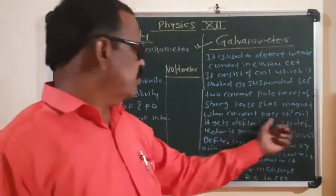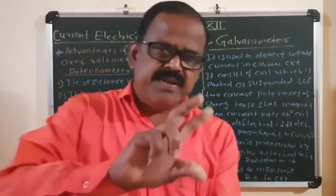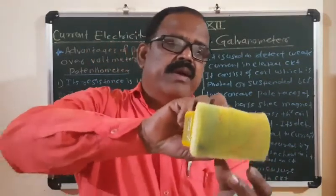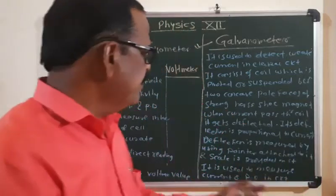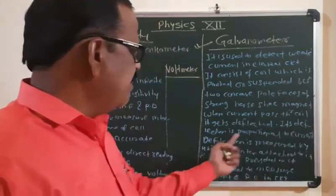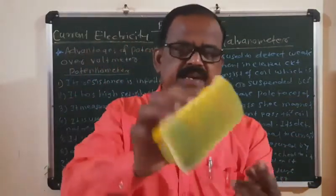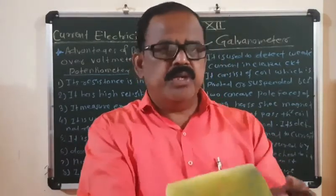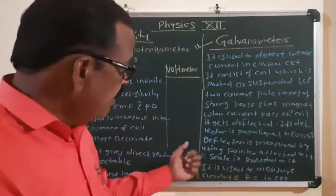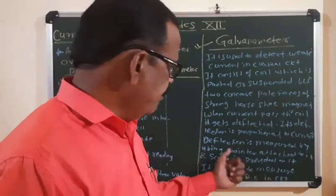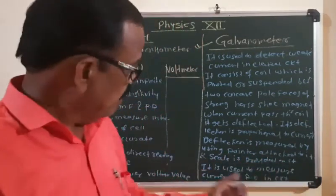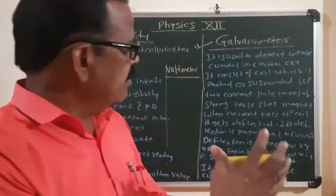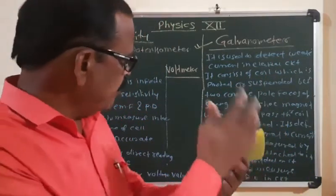When current passes through the coil, the coil gets deflected — that is, the coil gets twisted. Its deflection is proportional to the current. The deflection is measured by using a pointer attached to it, and a scale is provided on it; the scale is already marked on the galvanometer.